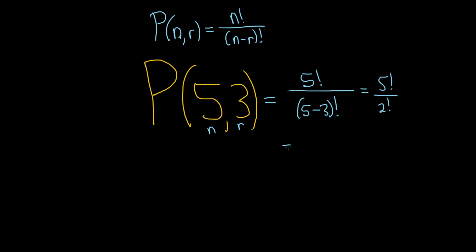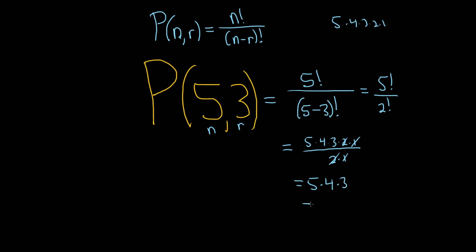So what is 5 factorial? 5 factorial is 5 times 4 times 3 times 2 times 1. And 2 factorial is just 2 times 1. You can think of the 1's as cancelling, the 2's as cancelling. So we're left with 5 times 4 times 3. 5 times 4 is 20, times 3, so we're going to get 60.